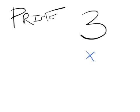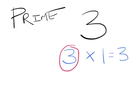There are only two: it is three, which is itself, and one. Three times one equals three. They are the only factors of three, and because the only factors of three are itself and one, that means three is a prime number.